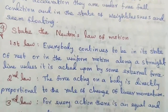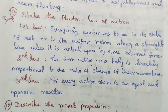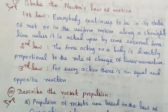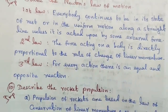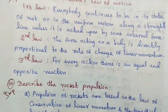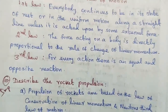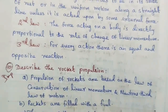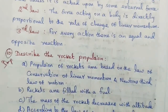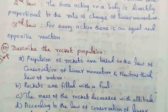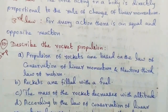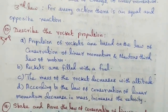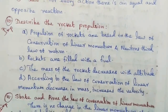Question number ten: describe rocket propulsion — important detailed question. Propulsion of rockets is based on the law of conservation of linear momentum and Newton's third law of motion. Rockets are filled with fuel. The mass of the rocket decreases with altitude. According to the law of conservation of linear momentum, decreasing mass increases the velocity.